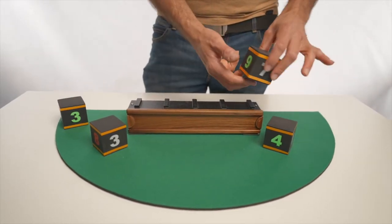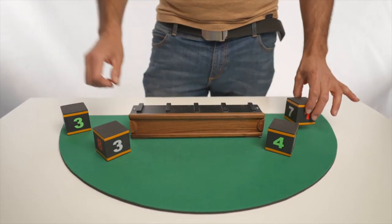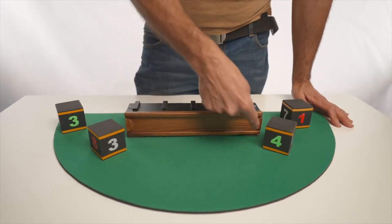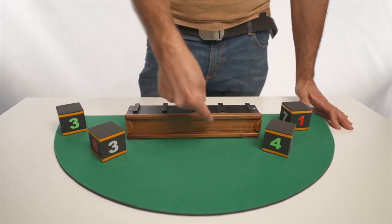Here I have some cubes. On each one there are some numbers. Here is a panel that hides something. We'll get back to it later.